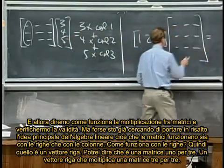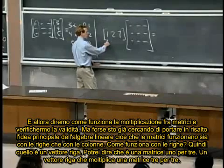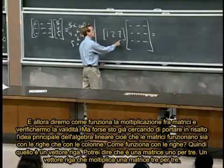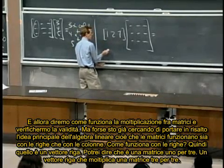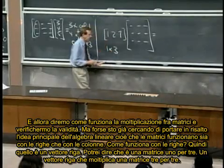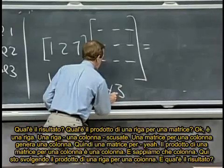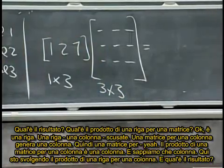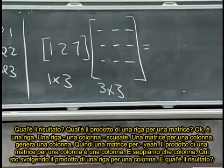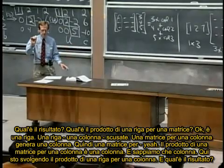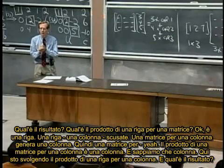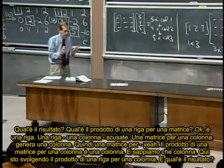Okay. How does it work by rows? What, what, so this is a, that's a row vector, it's a, I could say that's a one by three matrix, a row vector multiplying a three by three matrix. What, what's the output? What's the product of a row times a matrix?